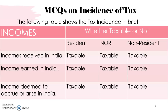The first point is income received in India. If any income the assessee receives in India, then that income is taxable for all three cases — that is, for resident, not ordinarily resident, and non-resident. The second point is income earned in India. If any income is earned by the assessee in the previous year in India, then also you have to tax it for all three cases.